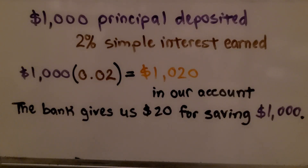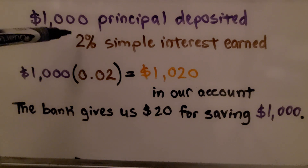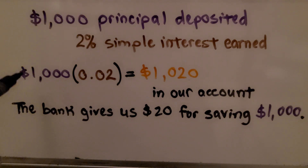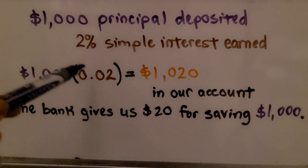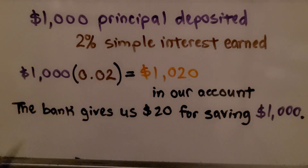If we open a savings account and deposit $1,000, our principal deposit is $1,000. If the bank pays us 2% simple interest for having that money, we multiply the $1,000 principal times 2% written as a decimal and we get $1,020 in our account. The bank gives us $20 for saving $1,000.